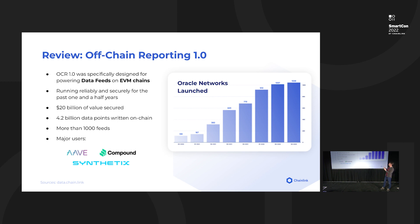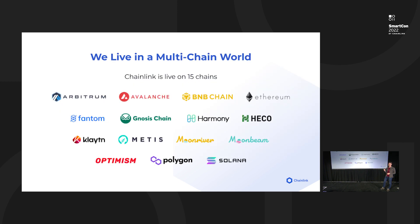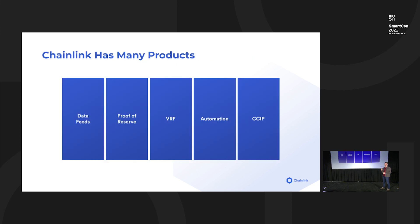OCR 1 was specifically designed for powering data feeds on EVM chains, but in the past two years the ecosystem has evolved. Today we live in a multi-chain world: Chainlink is live on 15 chains — some are EVM chains, some are L2s, and then we have completely new blockchain designs like Solana. We need to target a heterogeneous environment of chains, not just EVM chains.